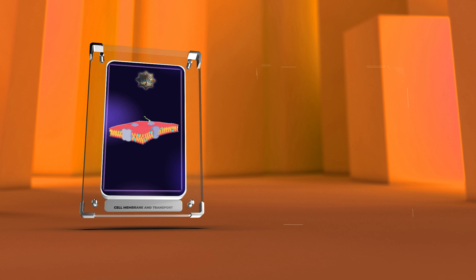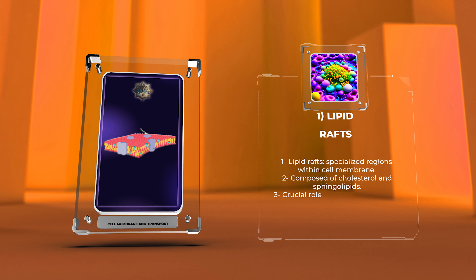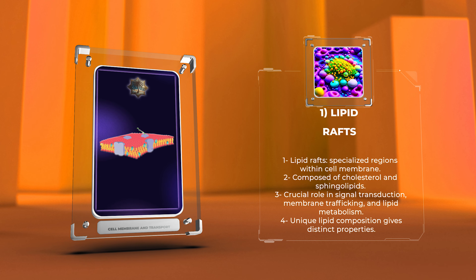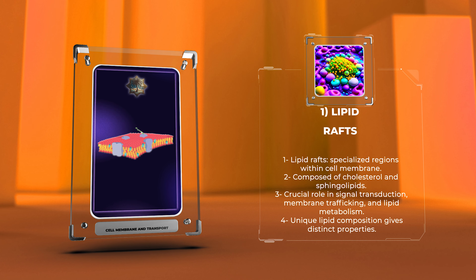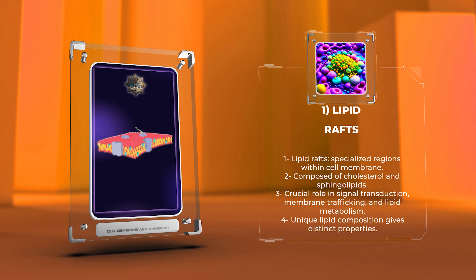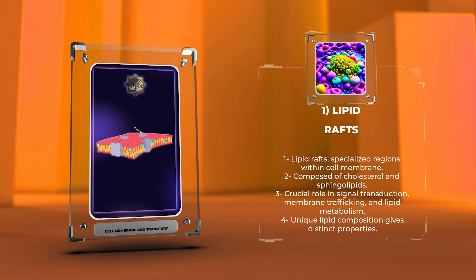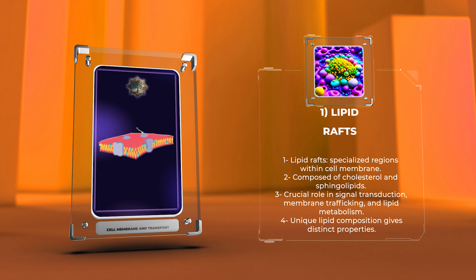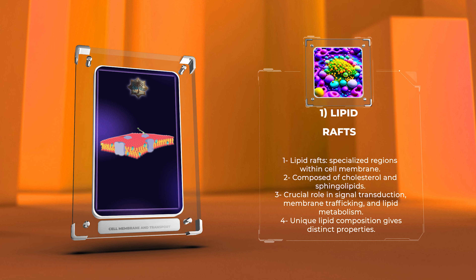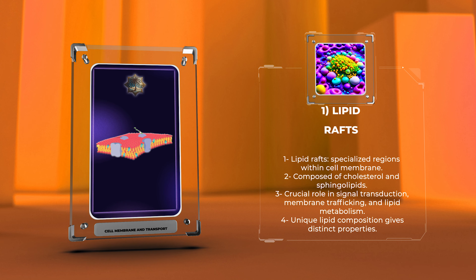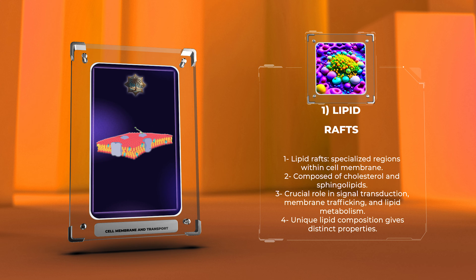Lipid rafts, also known as membrane microdomains, are specialized regions within the cell membrane composed of cholesterol and sphingolipids. These rafts play a crucial role in various cellular processes such as signal transduction, membrane trafficking, and lipid metabolism. The unique lipid composition of these rafts gives them distinct physical properties, making them more resistant to solubilization and allowing specific proteins to reside within them.